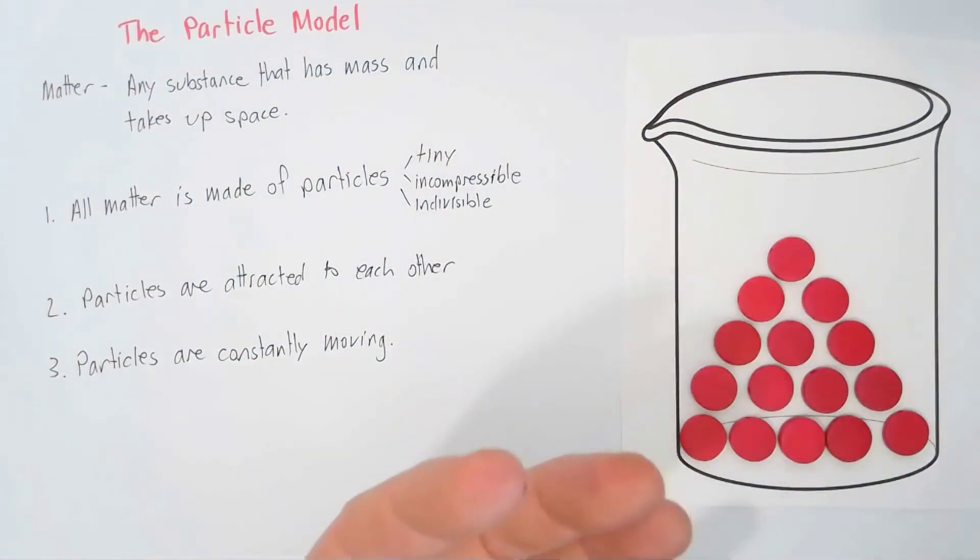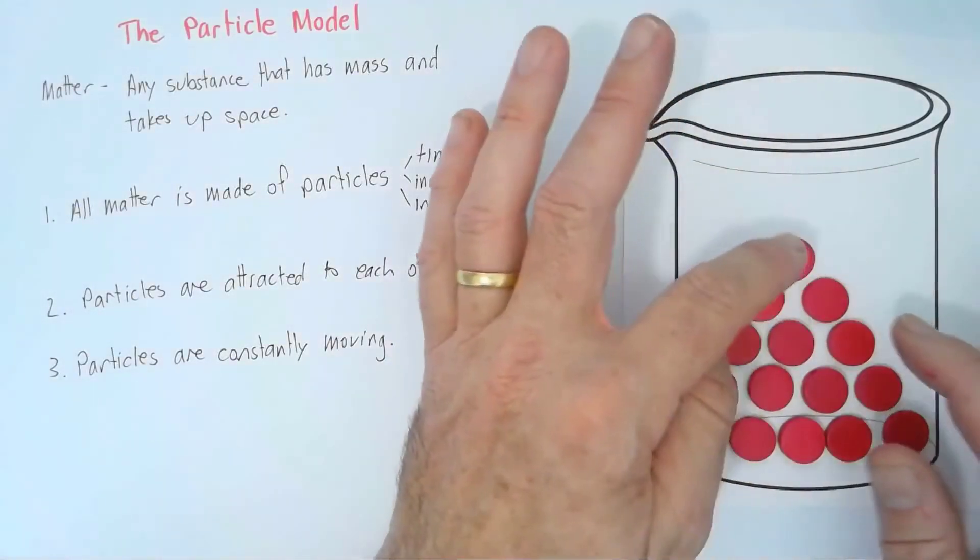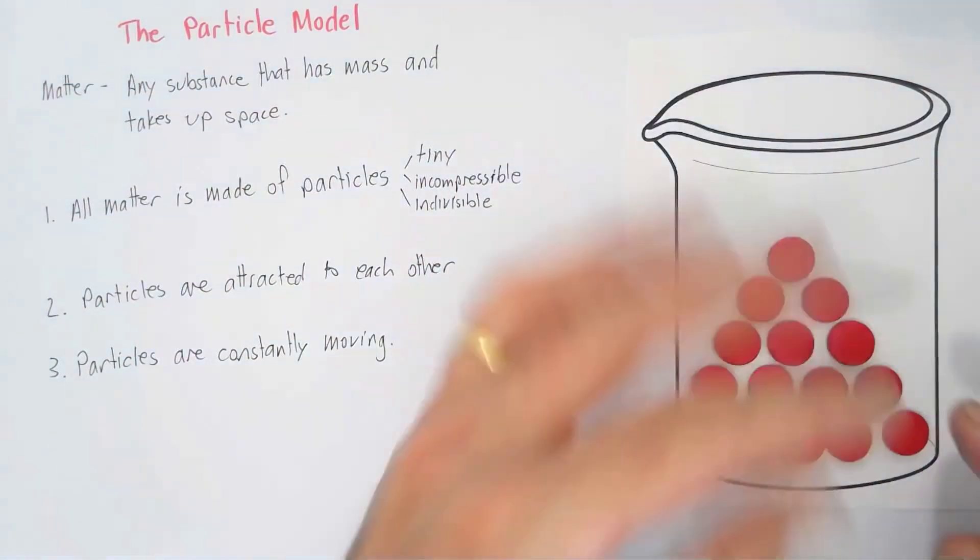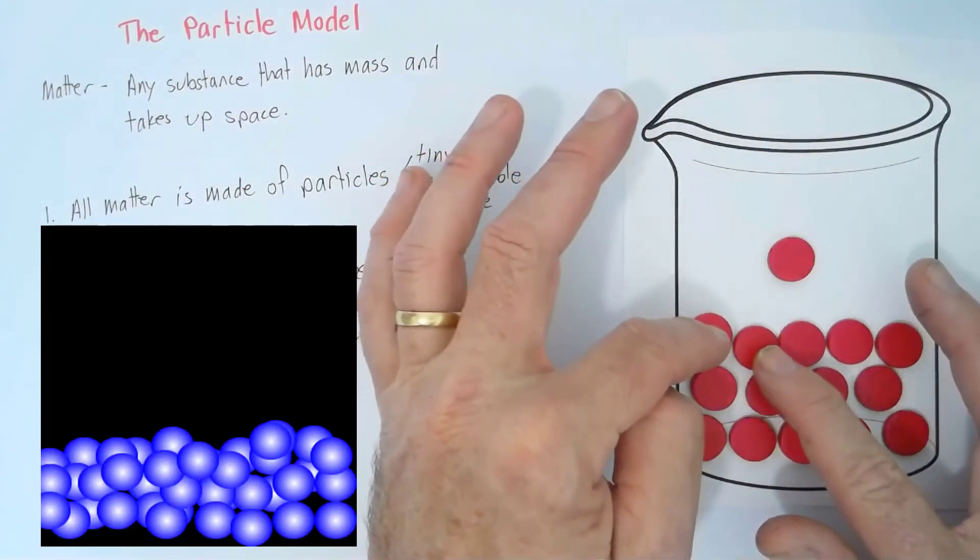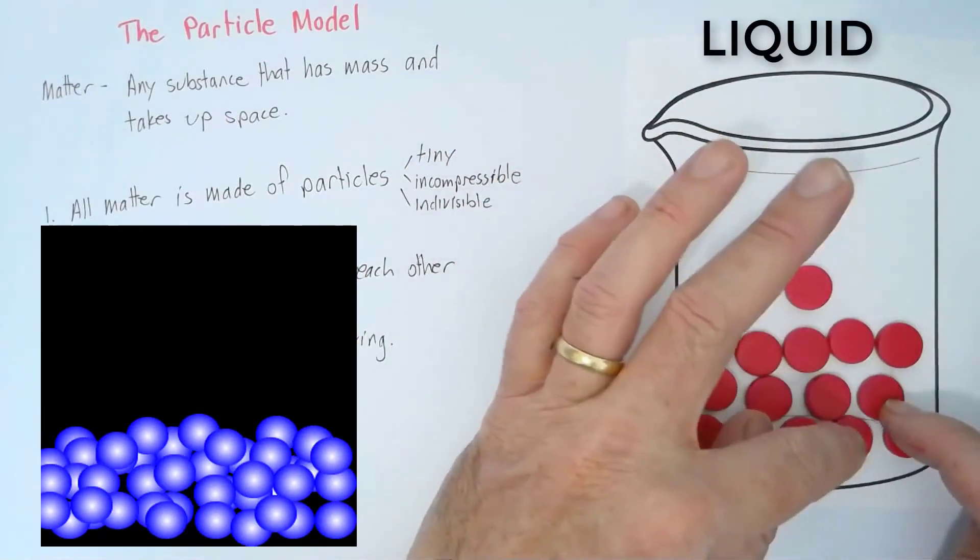If we were to add even more heat to it, then it makes the particles able to move around and change position. And that's when it becomes a liquid.